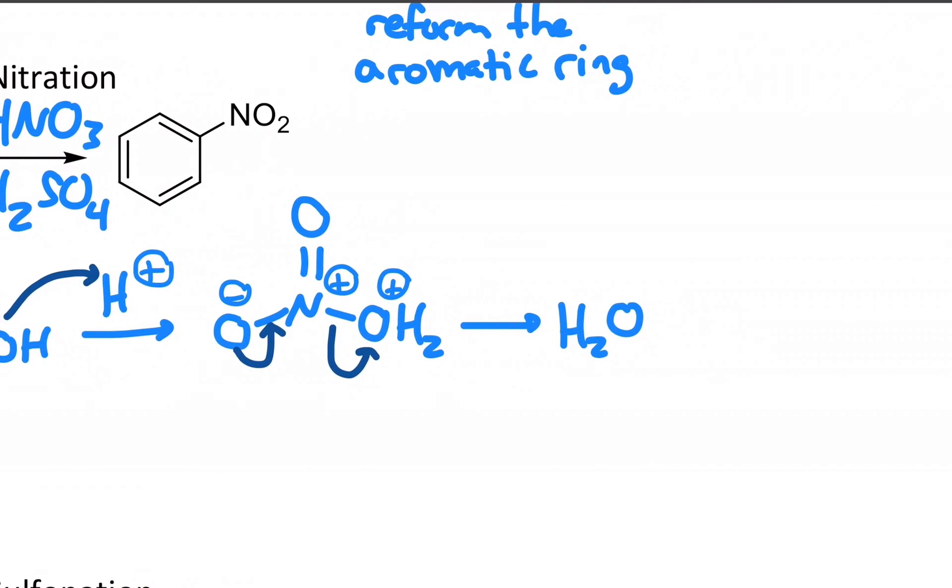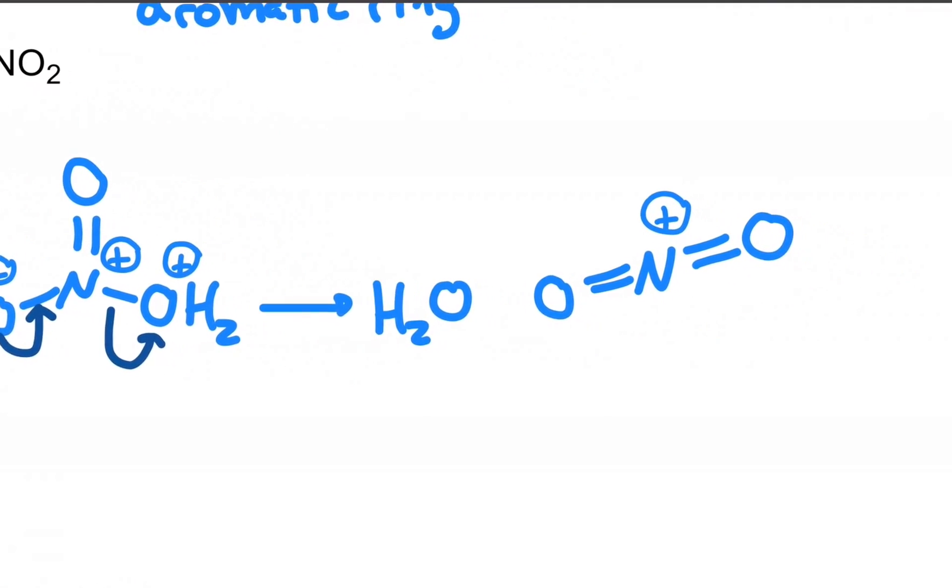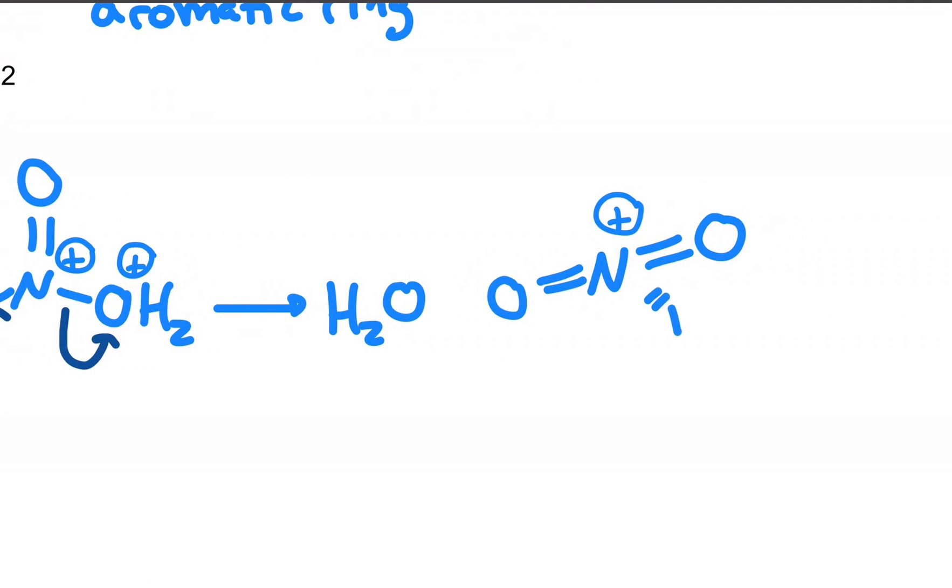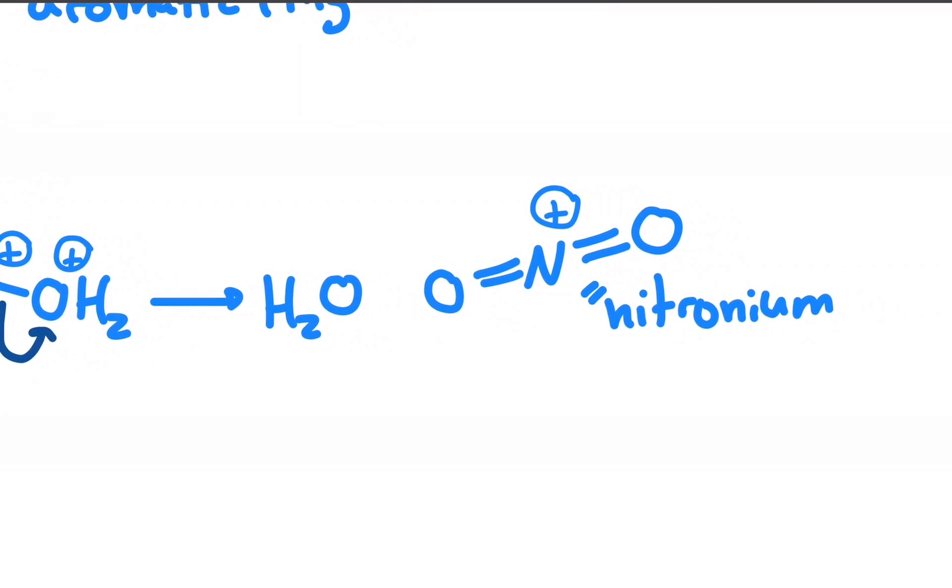And then you get an NO2 cation. And this is our active species. And this is called a nitronium ion. And that's what gets attacked by benzene.